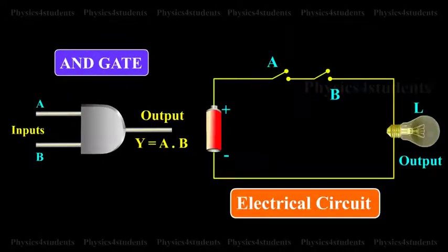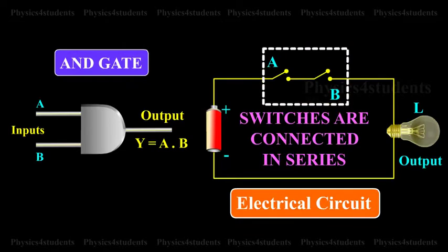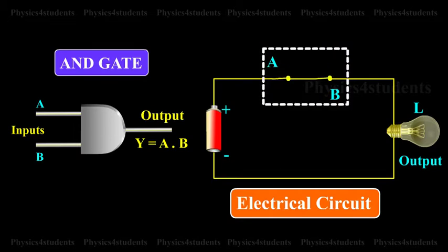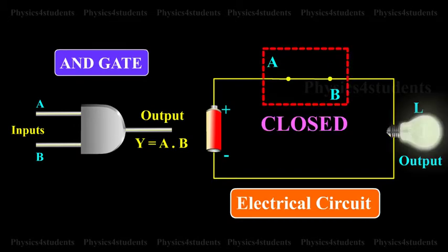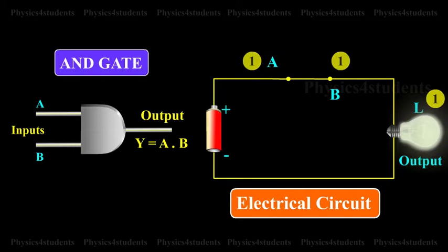AND gate may be thought of as an electrical circuit as shown in the animation in which the switches are connected in series. Only if A and B are closed, the lamp will glow and the output is high.